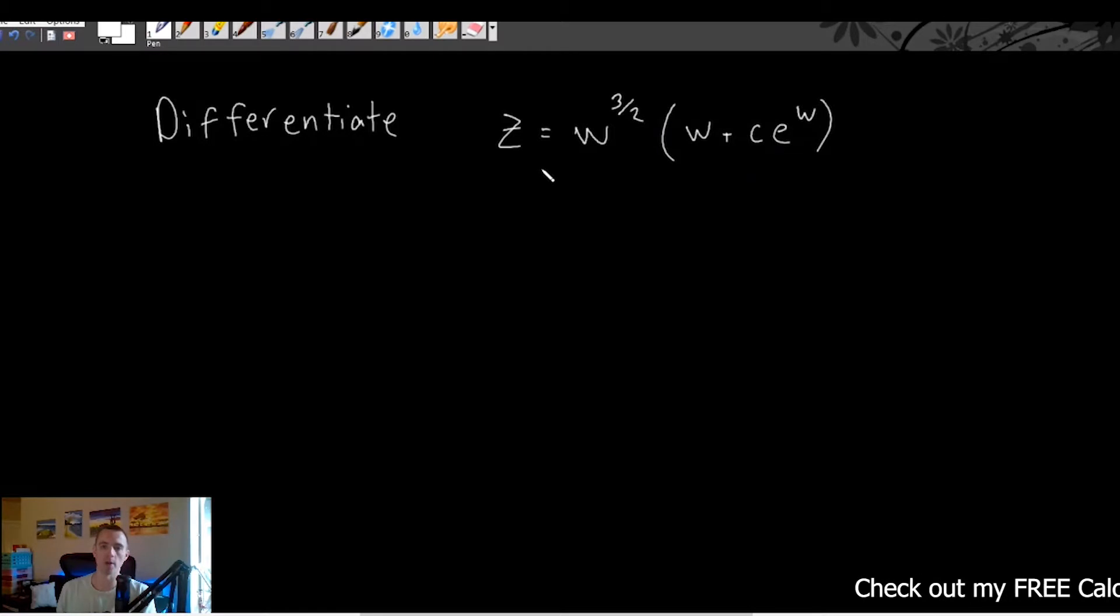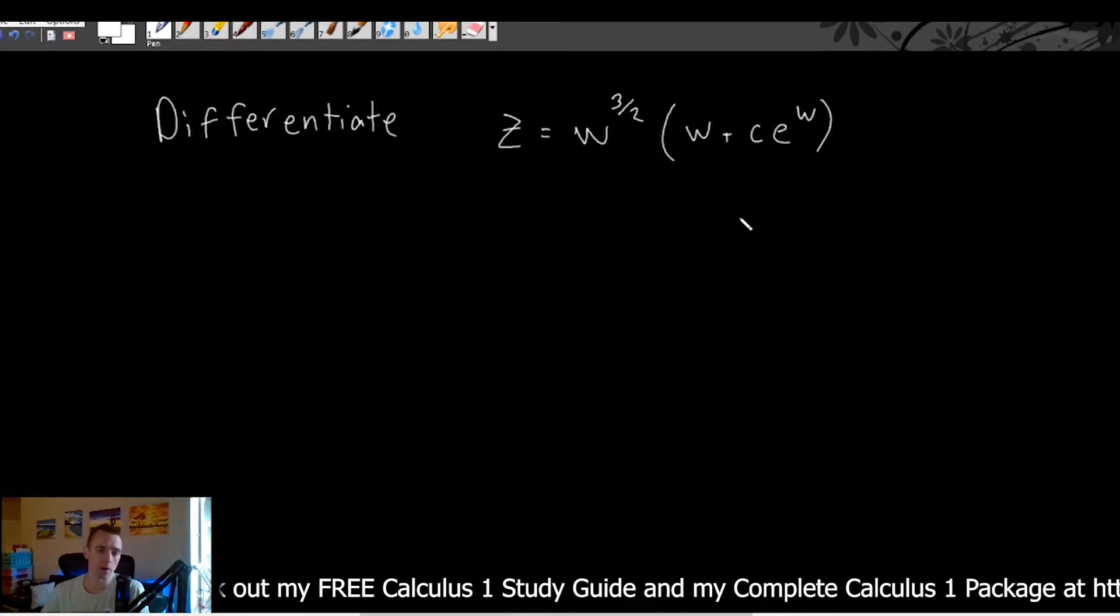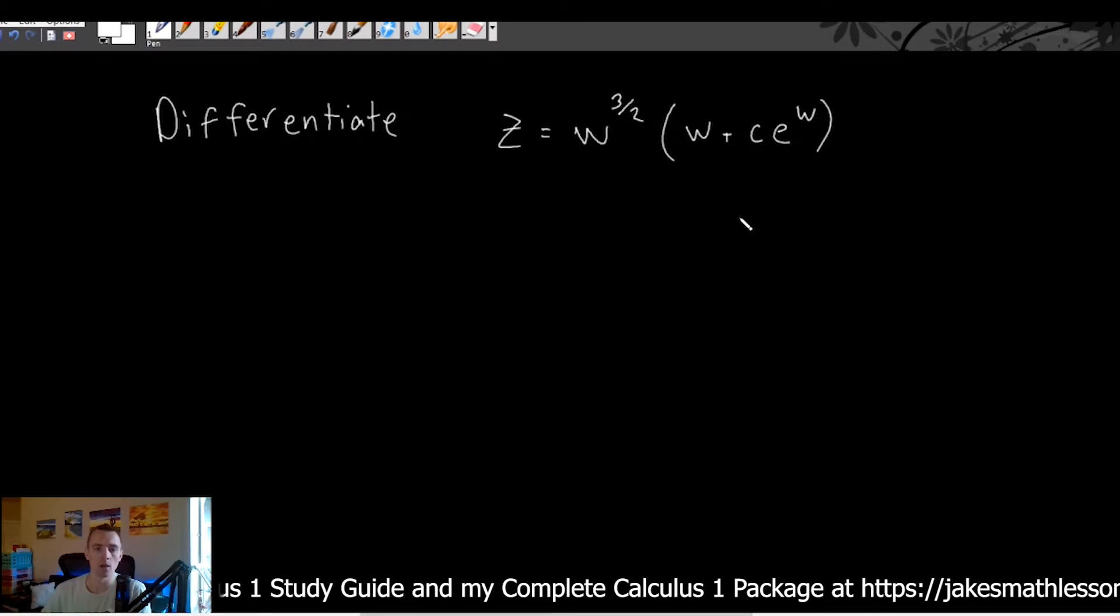So important thing to point out here, in this case, w is our variable. And then this c here is a constant, some unknown constant. So as a result of the fact that we don't know what that constant c is, it's completely possible that our answer is going to have a c in it somewhere as well. But we do want to treat w as our variable here.